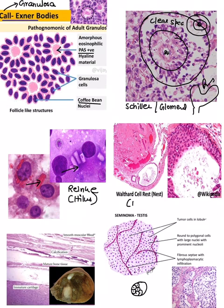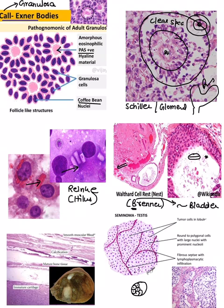Coming on to Brenner tumor — the important point is that the epithelium is similar to the bladder epithelium. You can see nests of tumor cells, and coffee bean nuclei are also visible. In ovarian tumors, coffee bean nuclei are seen in two places: Call-Axner bodies in granulosa cell tumor, and also in Brenner tumor.